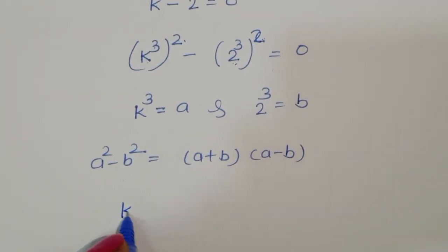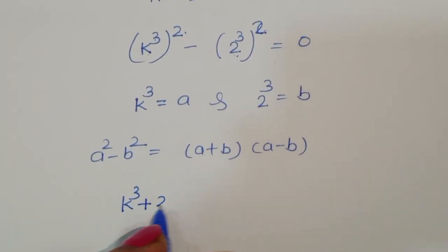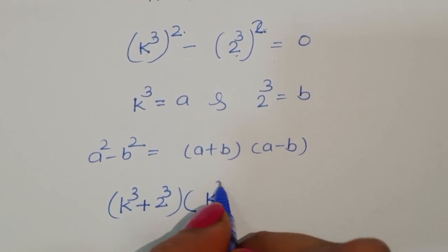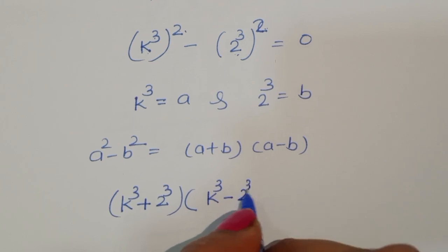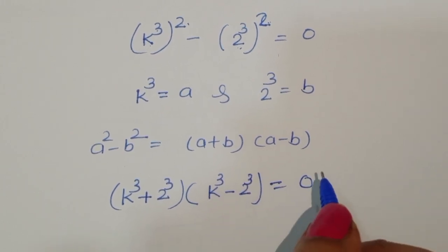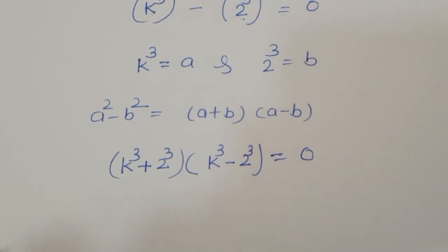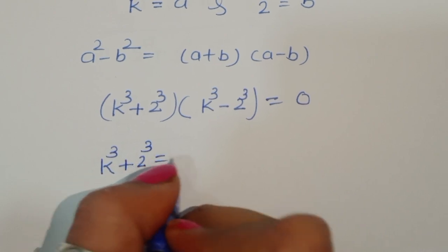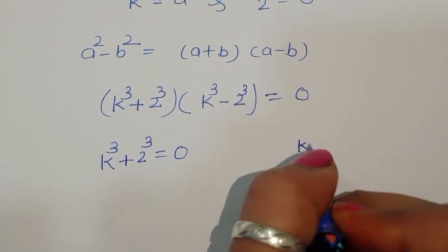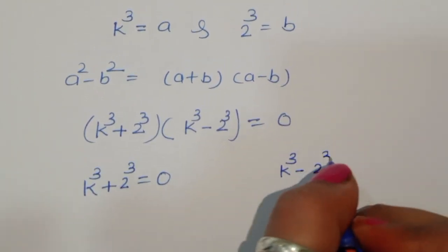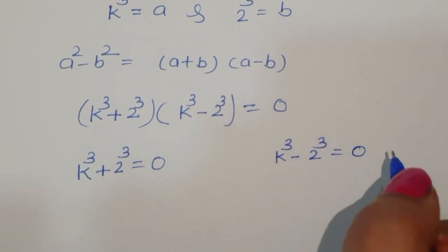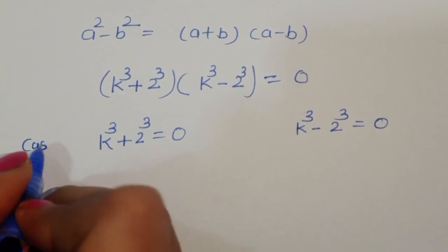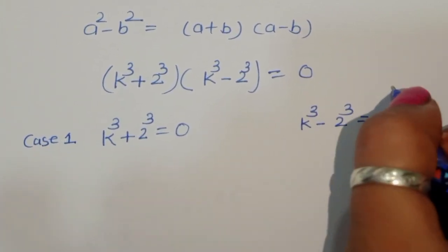Using this formula we get: (k^3 + 2^3)(k^3 - 2^3) = 0. Now we have two equations. Case 1: k^3 + 2^3 = 0, and Case 2: k^3 - 2^3 = 0.